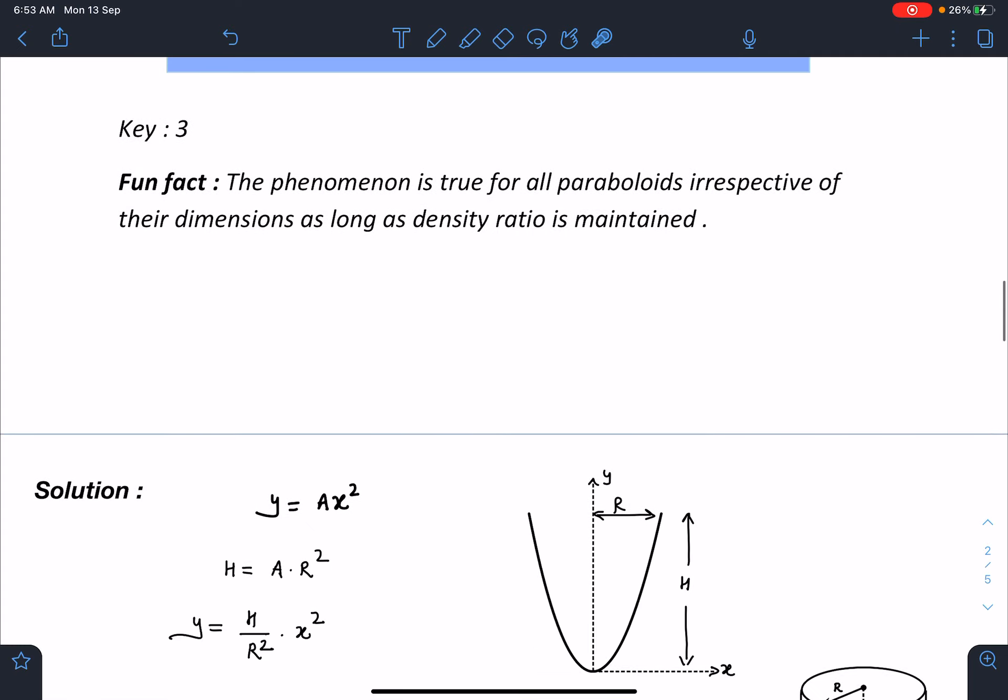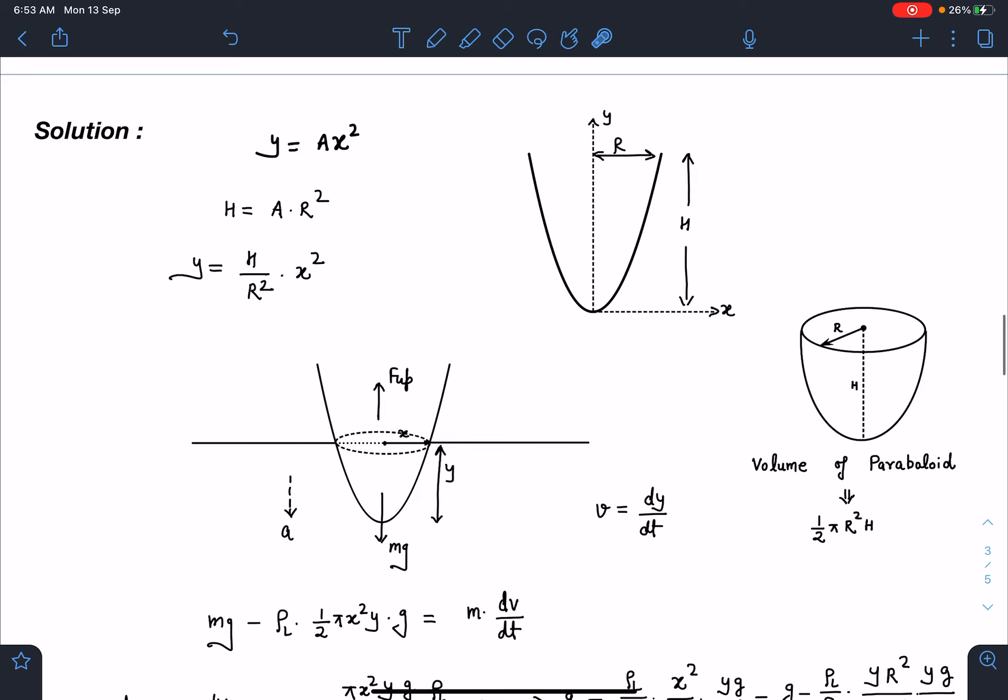So let us discuss here. So let us assume this paraboloid is generated from a parabola y is equal to ax square. So if I substitute this y value as h and this x value as r, I am going to get this constant a.